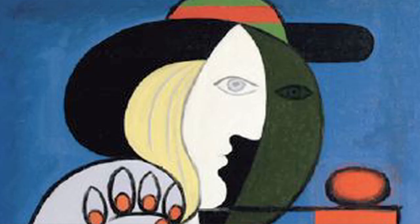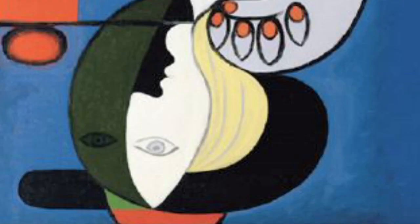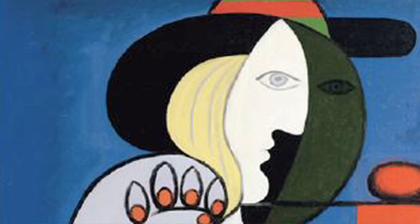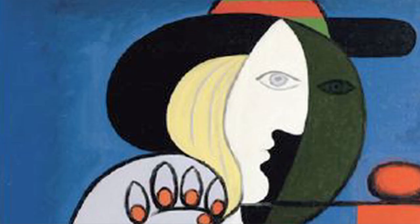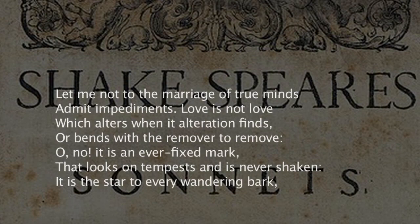Picasso, when he started painting in the Cubist period, set all kinds of constraints by which he had to create paintings that, at first sight, look like a complete random set of shapes and colors. Similarly, Shakespeare wrote all these sonnets, and the sonnets have this very strong rhyming constraint that he put on himself to write these works of art.